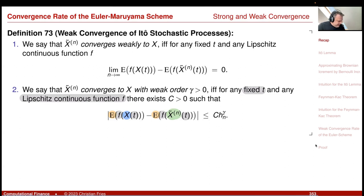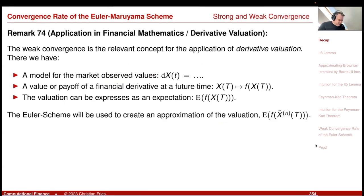Weak convergence is most relevant because the expression — expectation of a function f evaluated on our stochastic process at a fixed time capital T — is exactly what is of interest in derivative valuation. So I'd like to prove this result today.